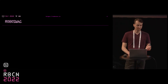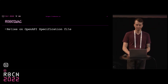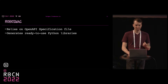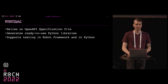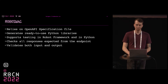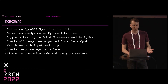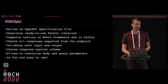I know one tool that does it great, and it's called RoboSwag — the one that Pekka mentioned as one of the ecosystem projects. The tool uses OpenAPI specification files to generate ready-to-use Python libraries, which can be utilized with both Python and Robot Framework code. It checks all possible responses from the server, not only 200s, and validates both payload (input) and the response (output) against the schema. It's also possible to overwrite body and query parameters of the request, and it's just fun and easy to use.